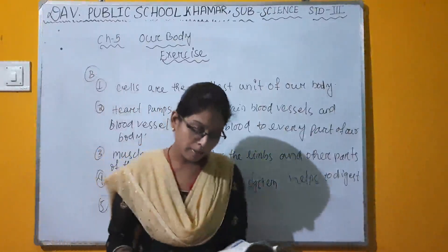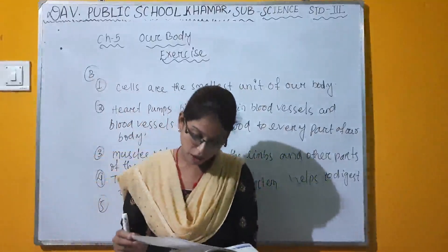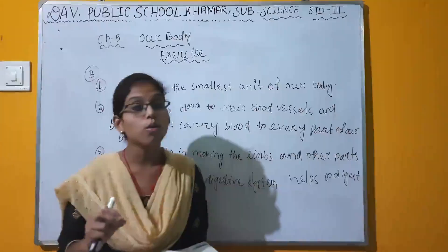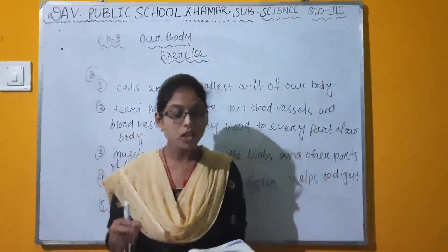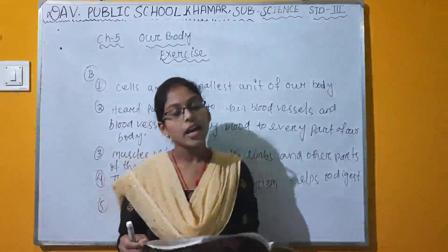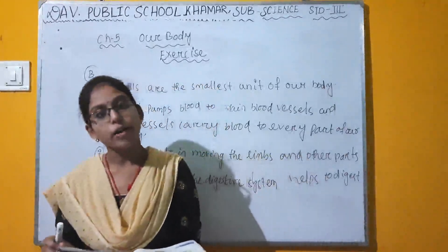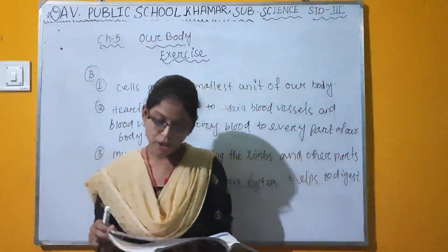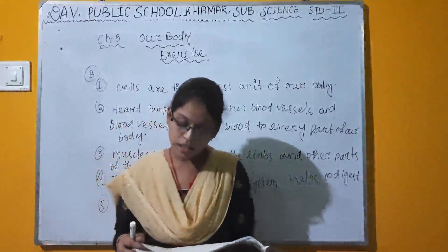Name the organs of the following organ systems. Digestive system: food pipe, stomach, intestine, and anus. Circulatory system: heart, blood, and blood vessels. Respiratory system: nose, windpipe, and lungs. Nervous system: brain, spinal cord, and nerves. Excretory system: lungs, skin, and kidney.